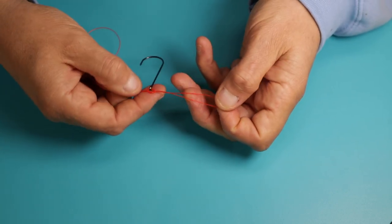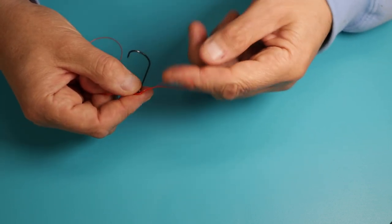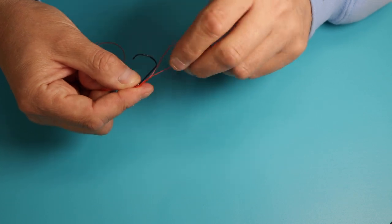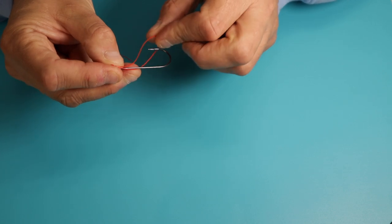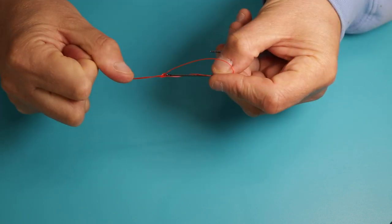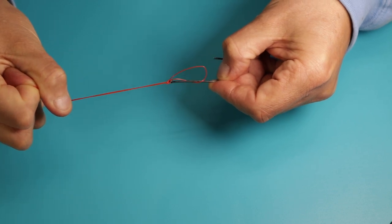and there you have a simple overhand knot tied at the top of the hook with a loop at the end. You then take that loop and pass it over the item that you're tying to. Start to pull down the knot and tighten everything together.